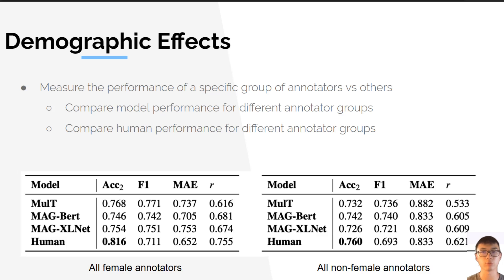This is also true for human predictions. This implies that the original annotations likely did not control for the demographics of the annotators, and thus the evaluation, as well as the models developed, were likely inadvertently biased to work better for the general crowdsourcing population, which is predominantly female.